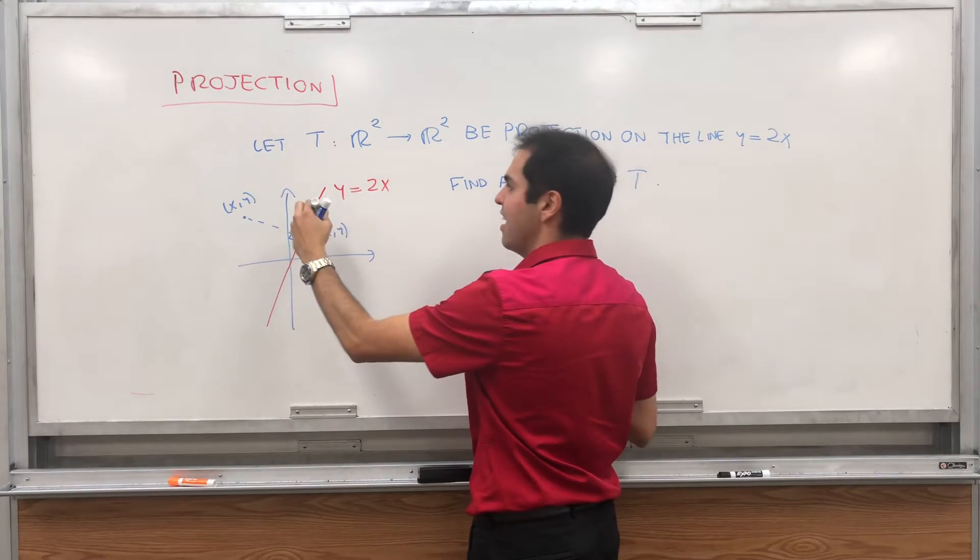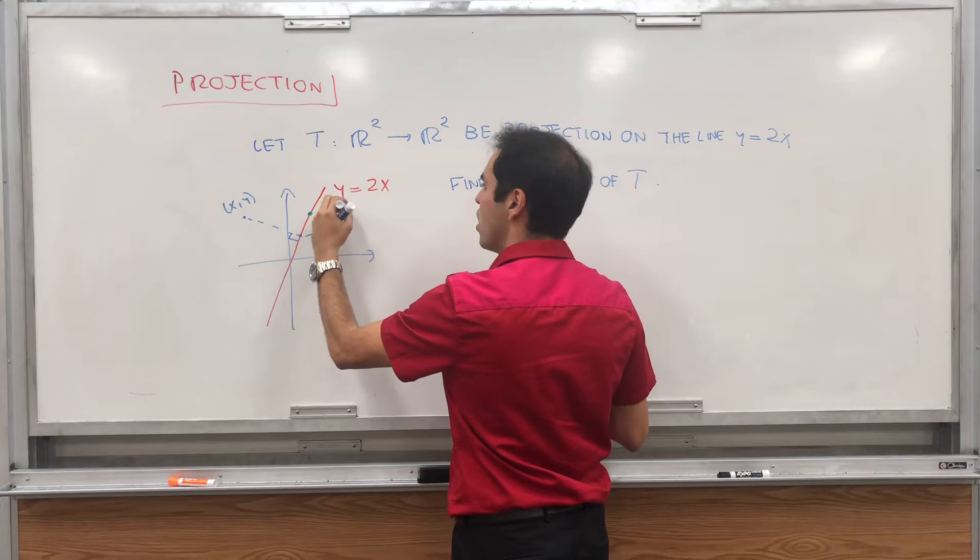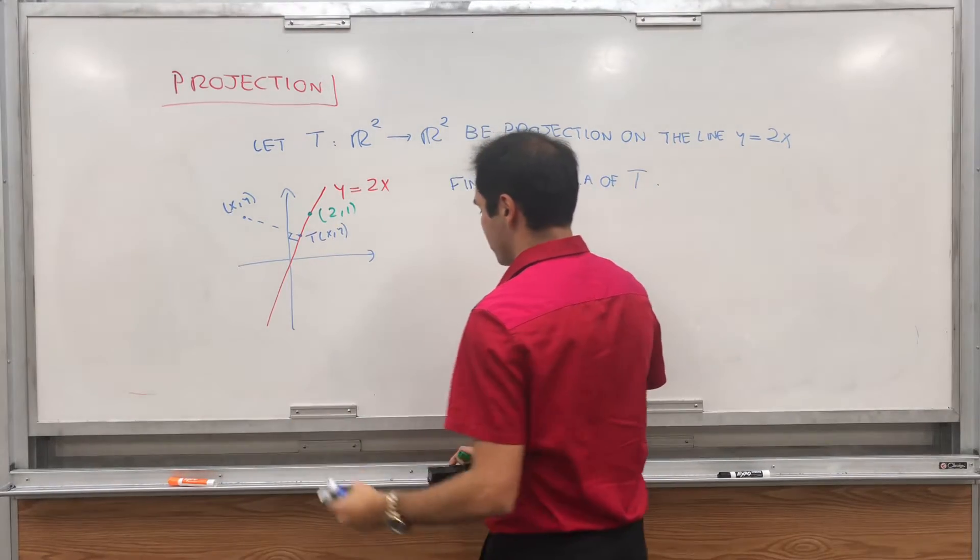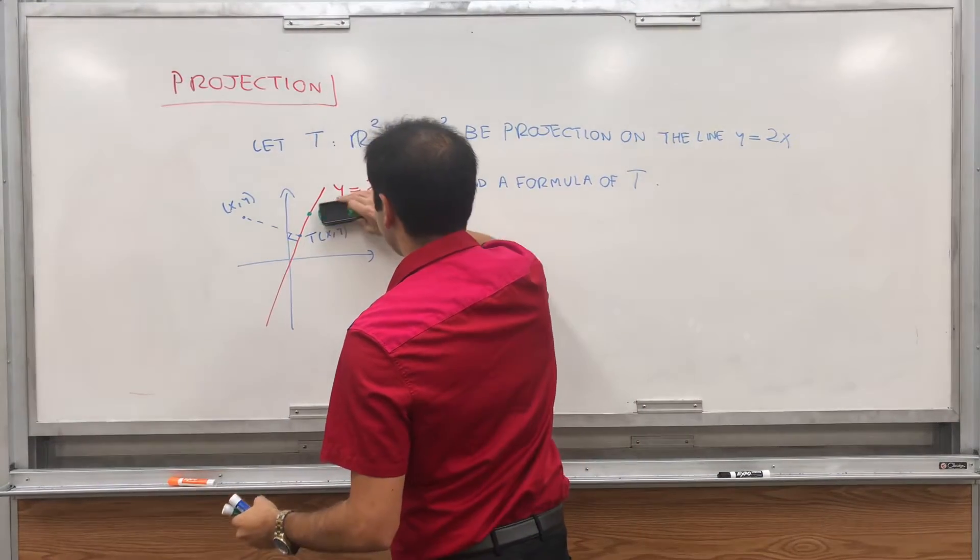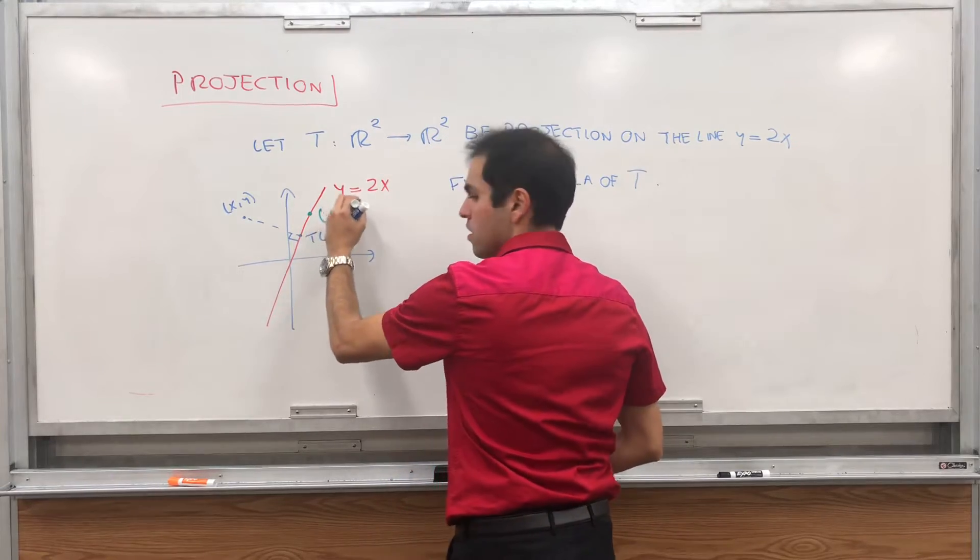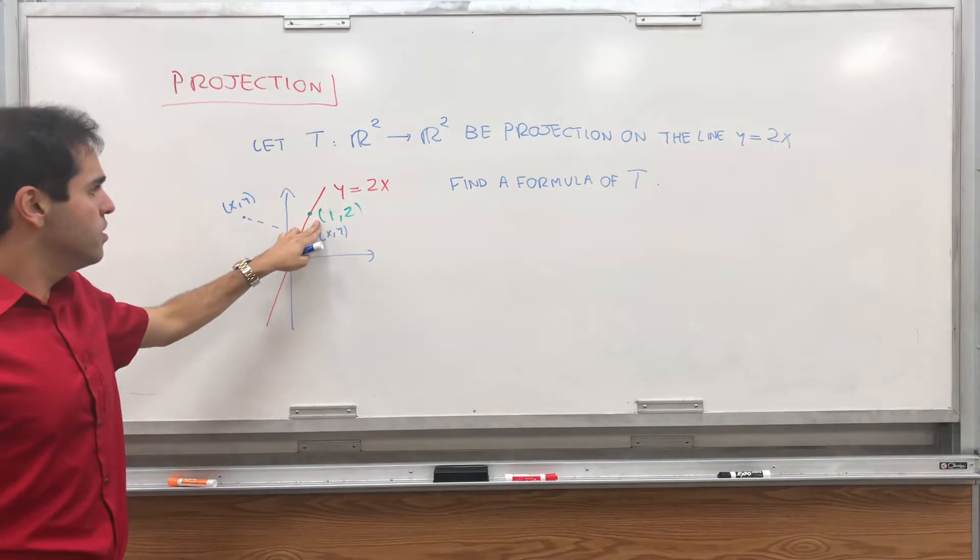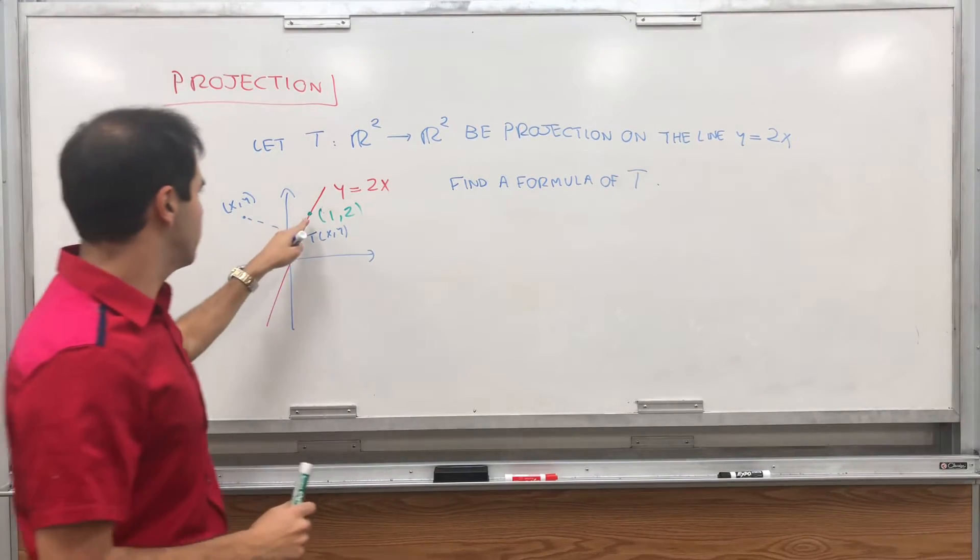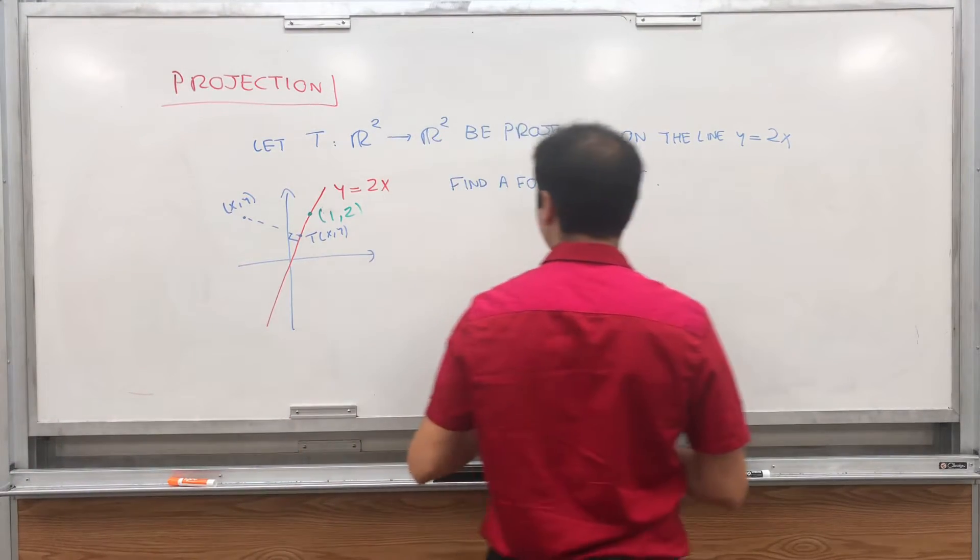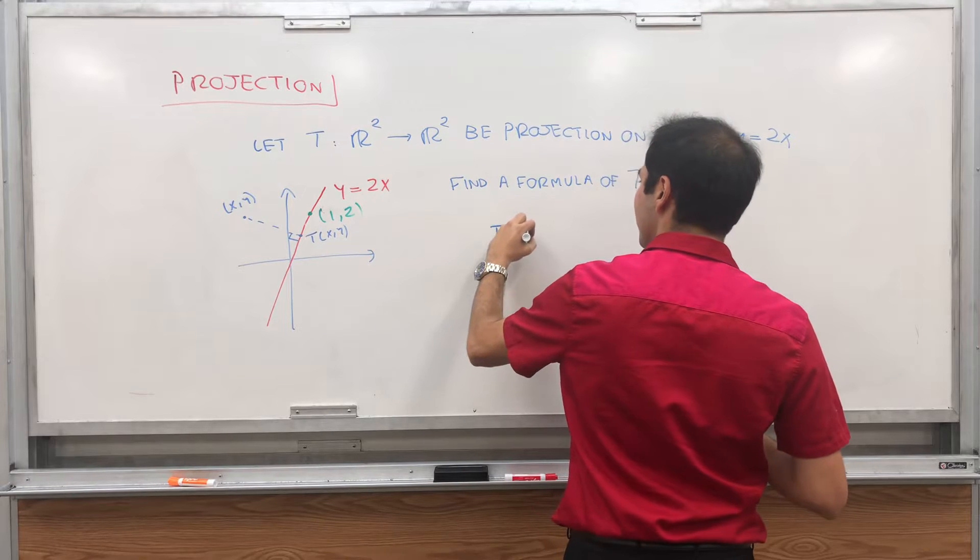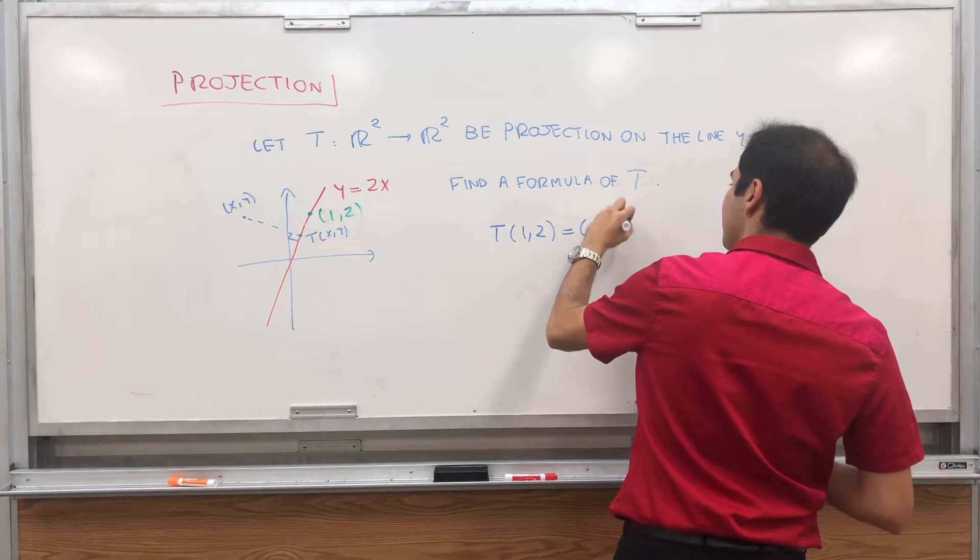Just as before, first of all, notice if you have a point on that line, let's say 1, 2, then nothing happens to it. If you squish 1, 2 on this line, you get the same thing. So T of 1, 2 is 1, 2.